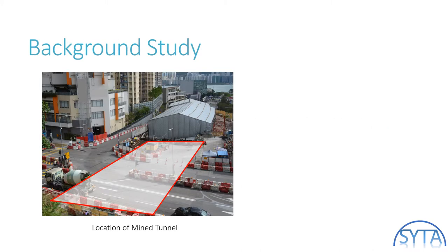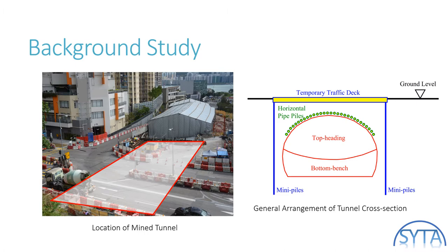Now let's look closer at the background of this project. Here is a photo showing the surroundings of the concerned tunnel section, which is 3 to 4 meters beneath the red circled area. In order to reduce the influence made by tunnel excavation works, a temporary traffic deck was constructed before the excavation. A row of horizontal pipe piles were installed above the tunnel crown as pre-excavation support measures. After that, excavation commenced by top heading and bottom bench sequences. The two excavation phases are kept far enough apart to avoid inter-affecting until the breakthrough of the top heading.